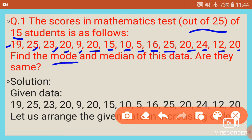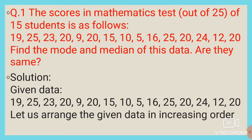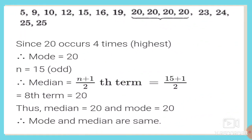We need to find the mode and median of this data — are they the same? First we write the given data and arrange it in ascending order: 5, 9, 10, 12, 15, 16, 19, 20, 20, 20, 20, 23, 24, 25, 25.